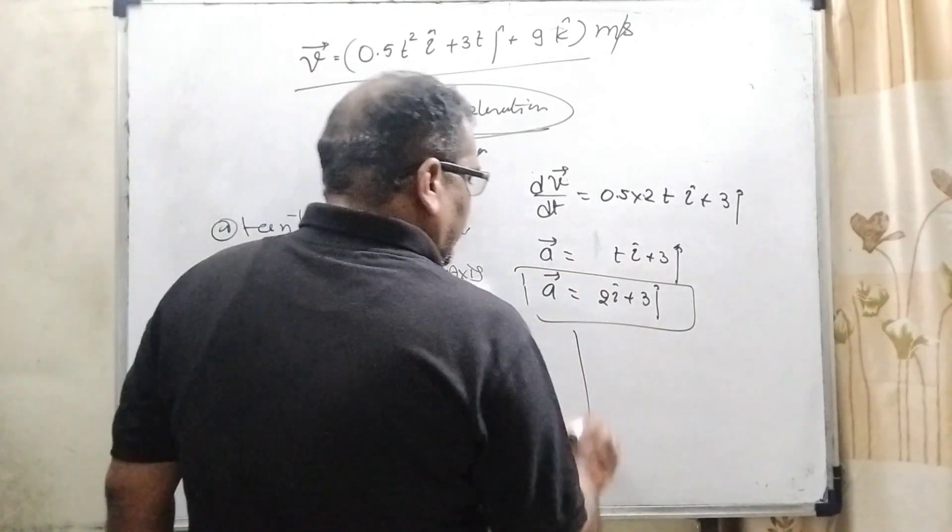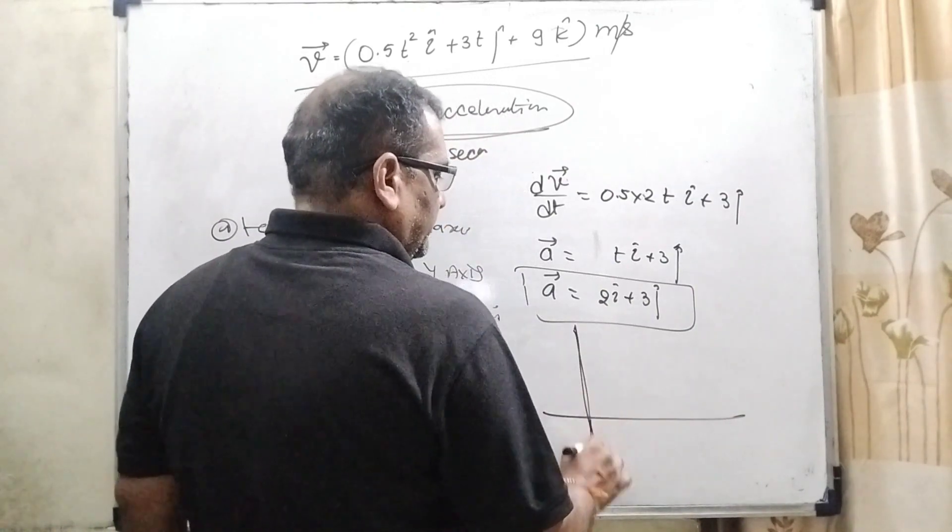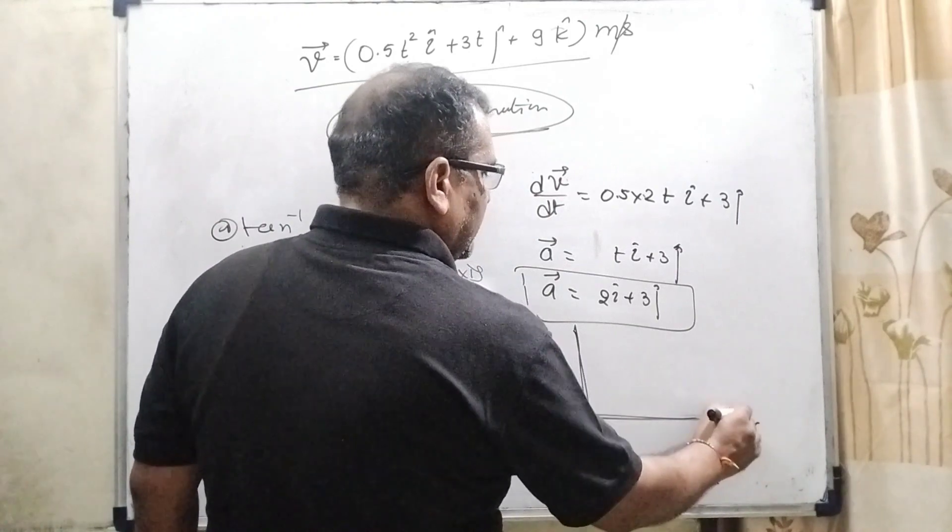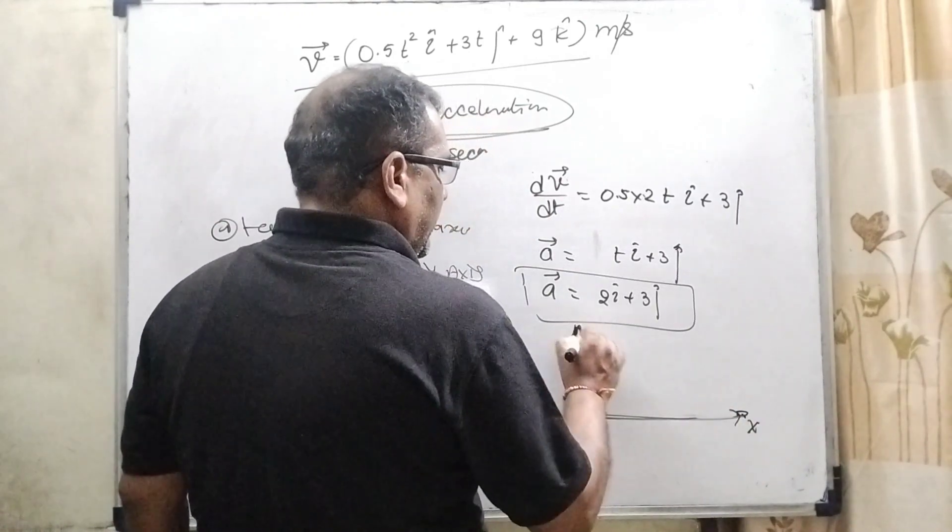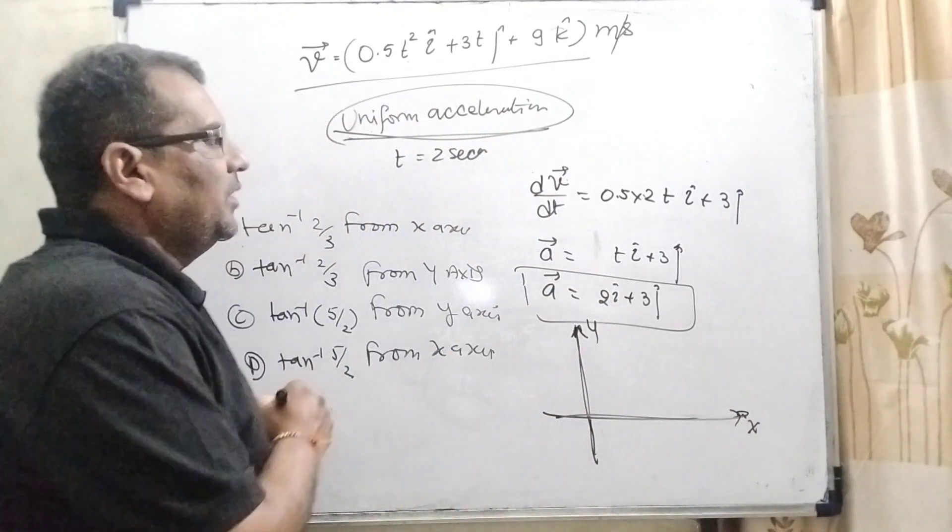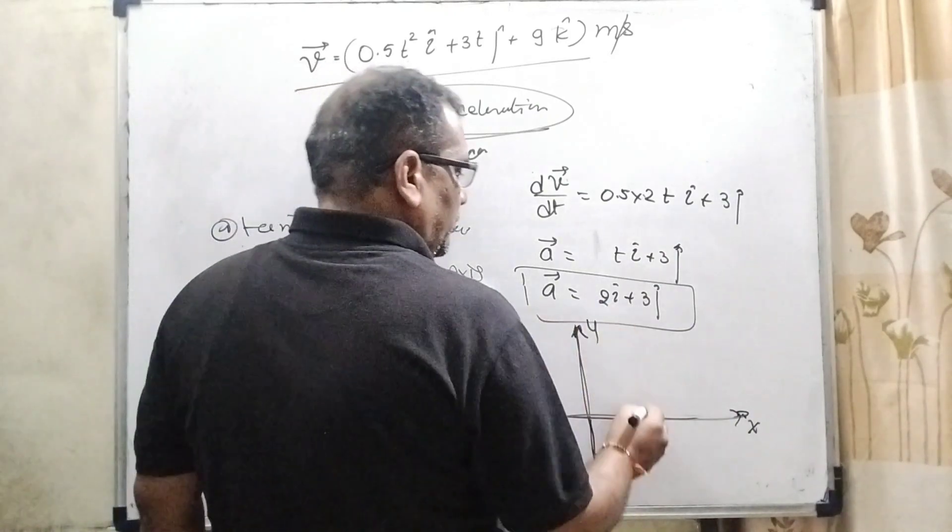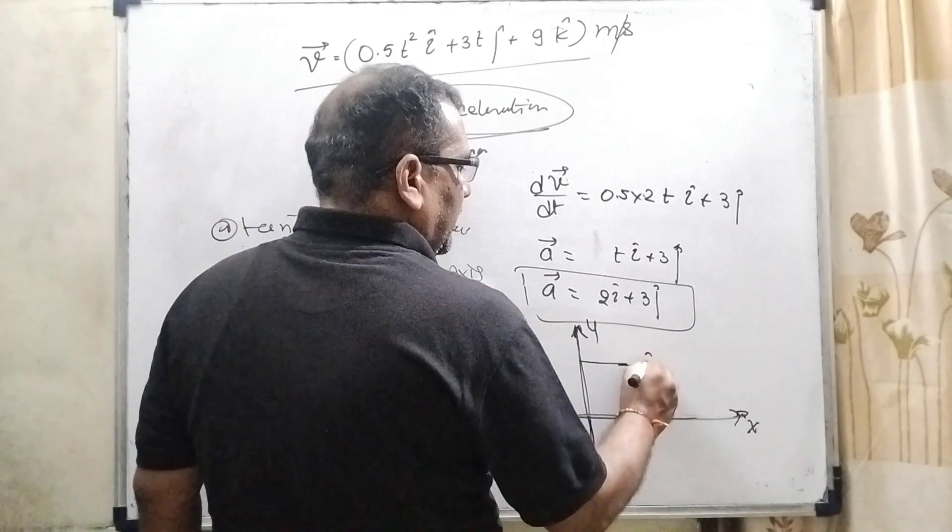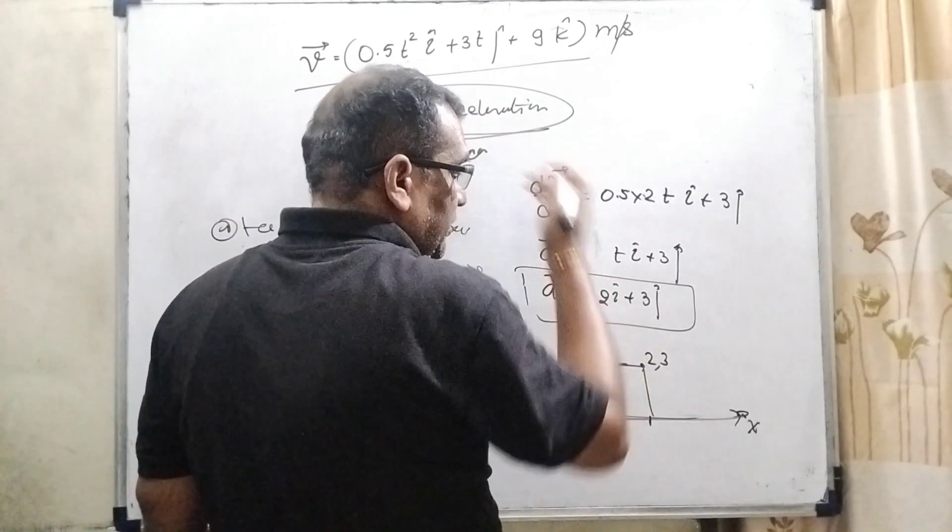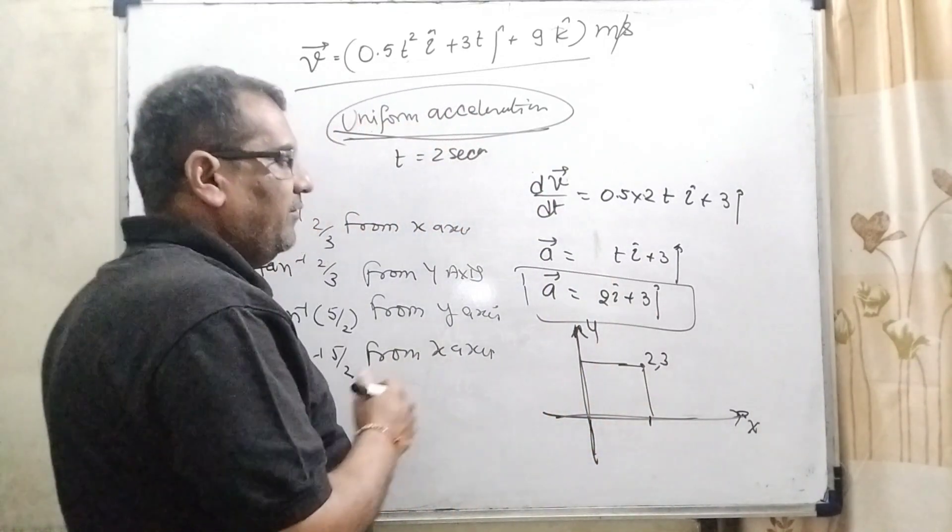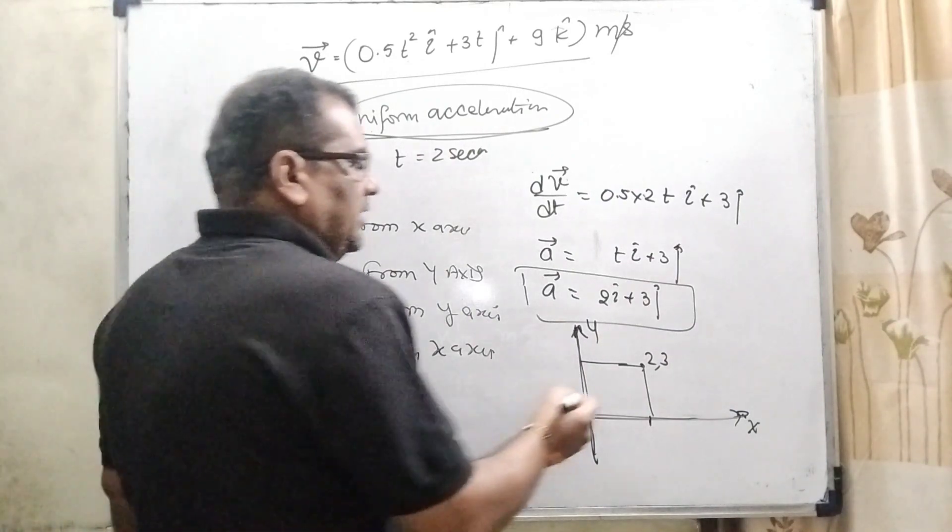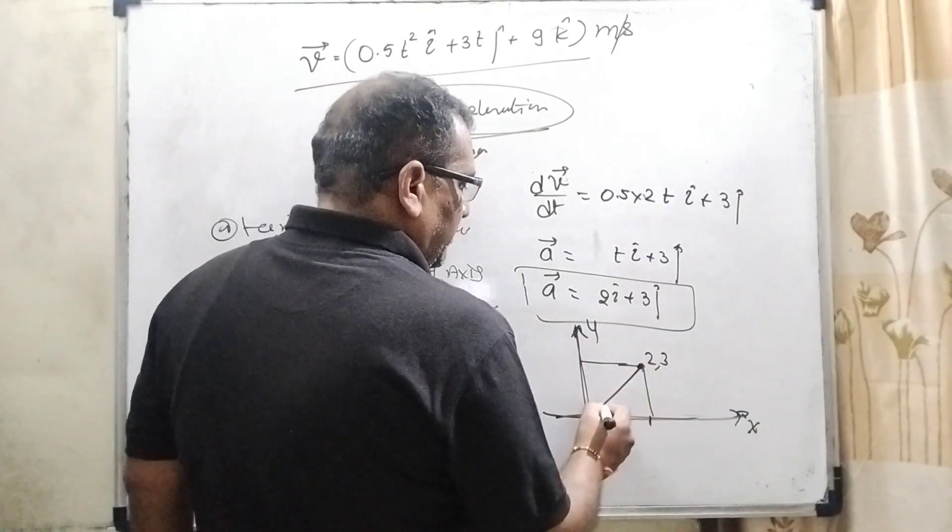If we have plotted the graph, acceleration in this graph, x-axis horizontal and this is y as usual. Here the coordinate that is 2 and 3. 2 is the component of x and 3 is the component of y, means 2i and 3j.